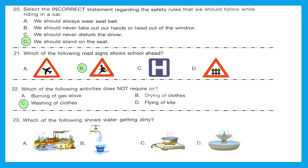Question: which of the following shows water getting dirty? Option A shows industrial waste being discharged into water through pipes, which is definitely going to make the water dirty. So option A is the correct answer. Option B is running tap water — not making water dirty, though it is wastage. Option C is cooking food — not making water dirty. Option D is a fountain — also not making water dirty. Option A is the right answer.